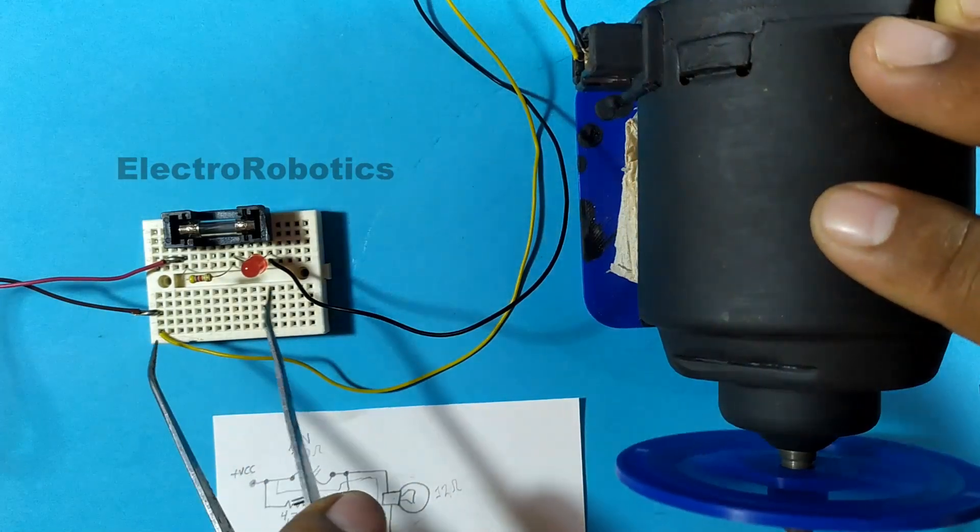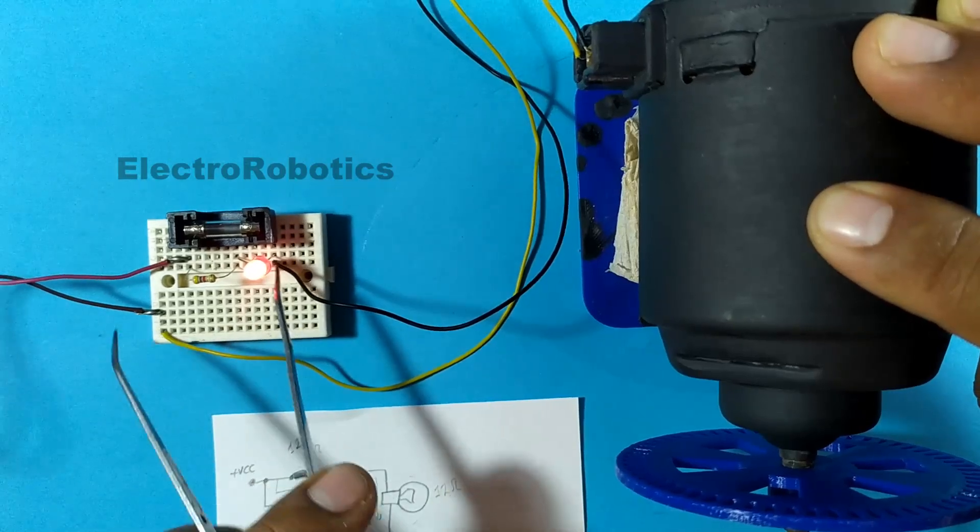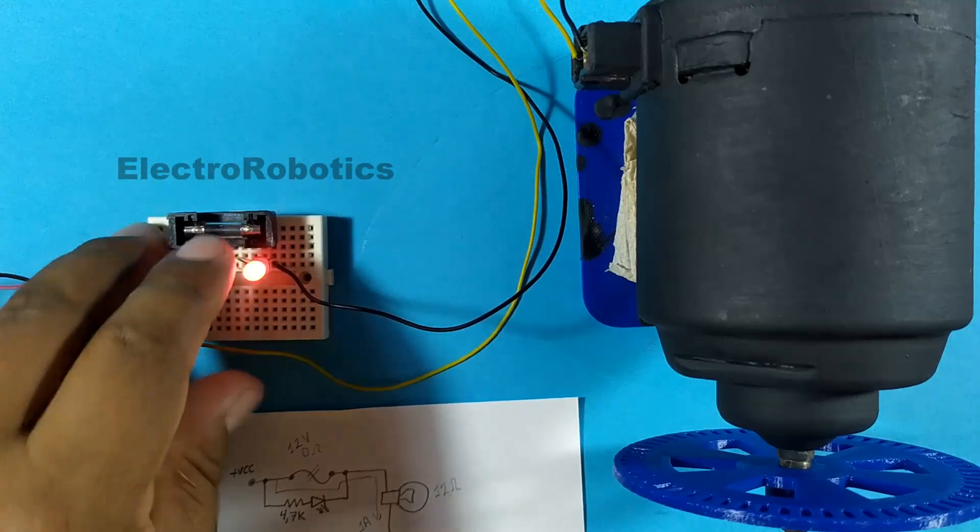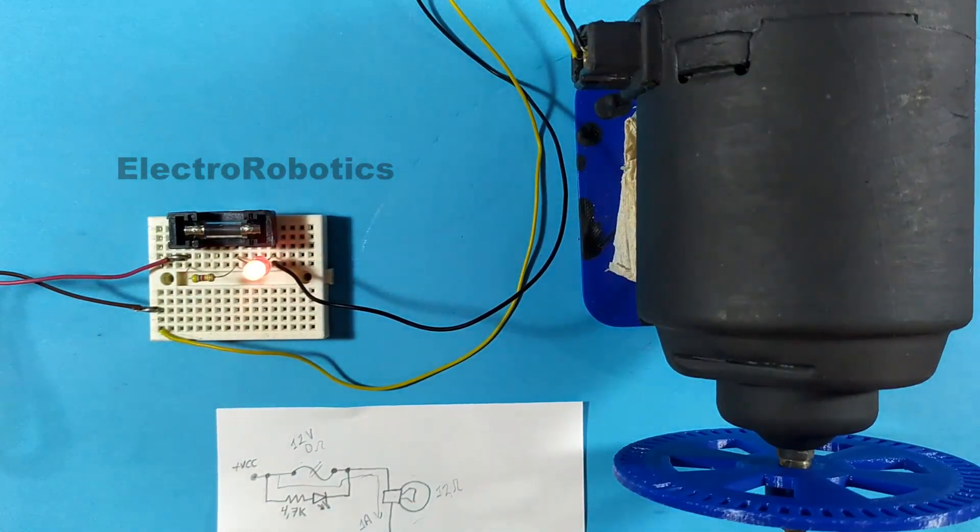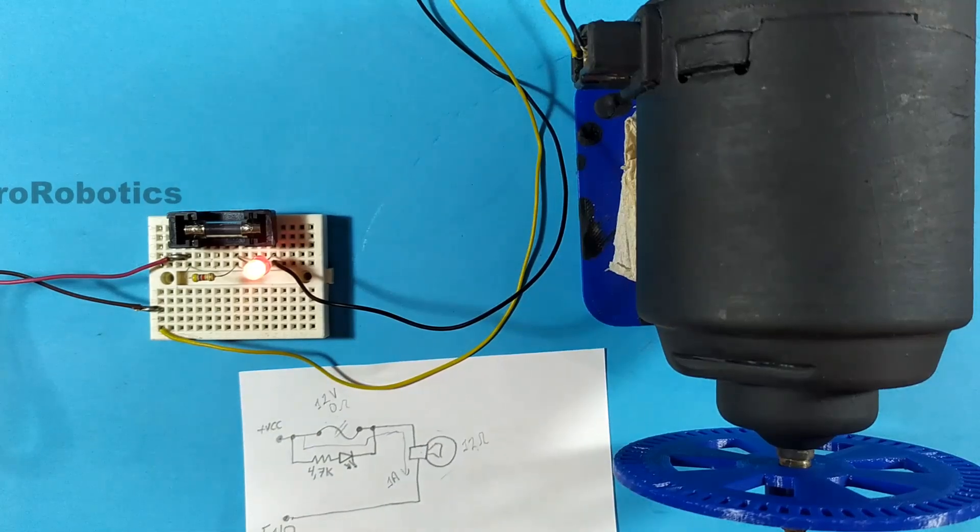Now we are going to cause a short circuit to blow the fuse. Very well, the fuse blew. There we can see that the LED has just turned on and the engine has turned off. Now the fuse no longer works. This way you will be able to know if your fuse is damaged.